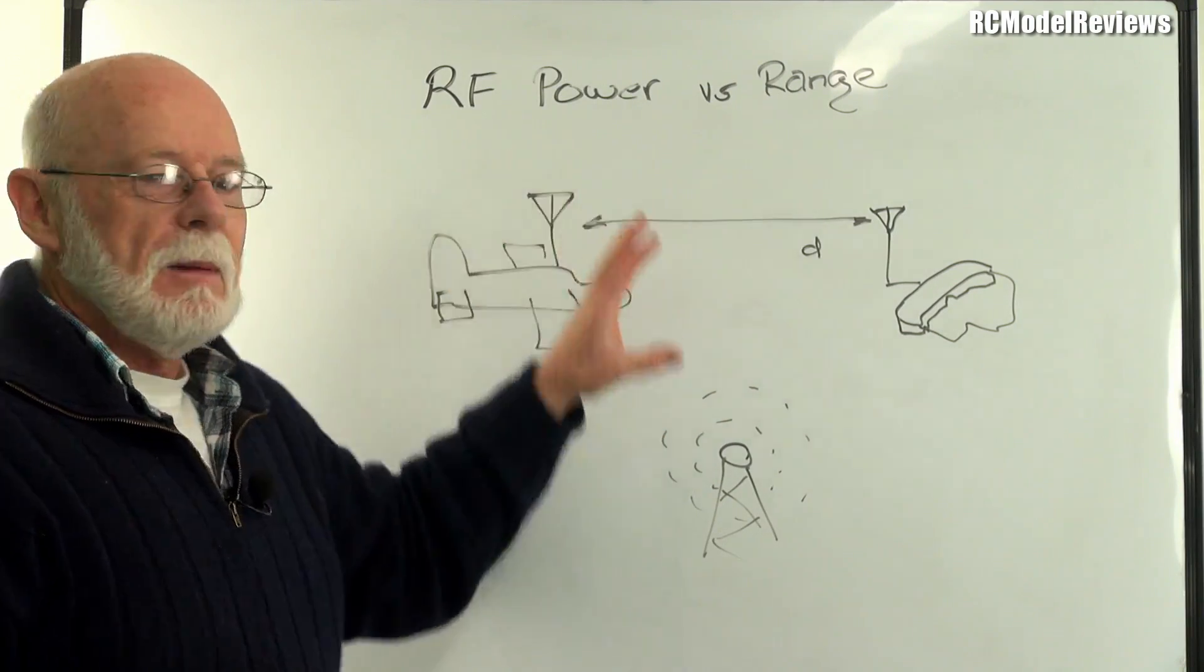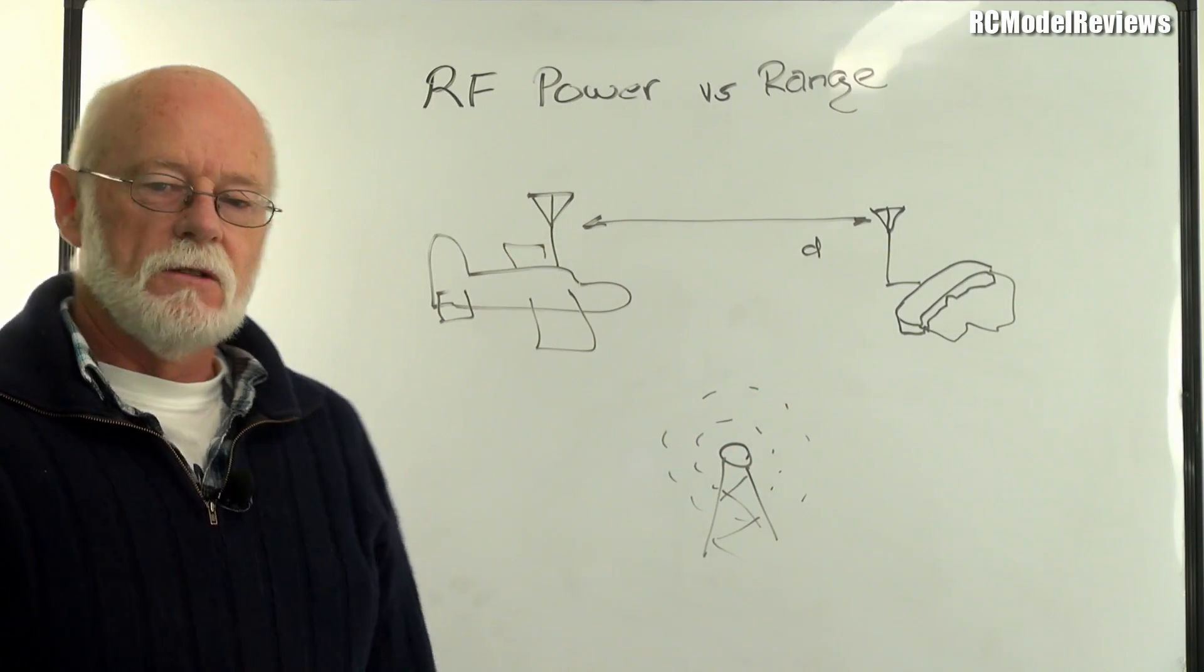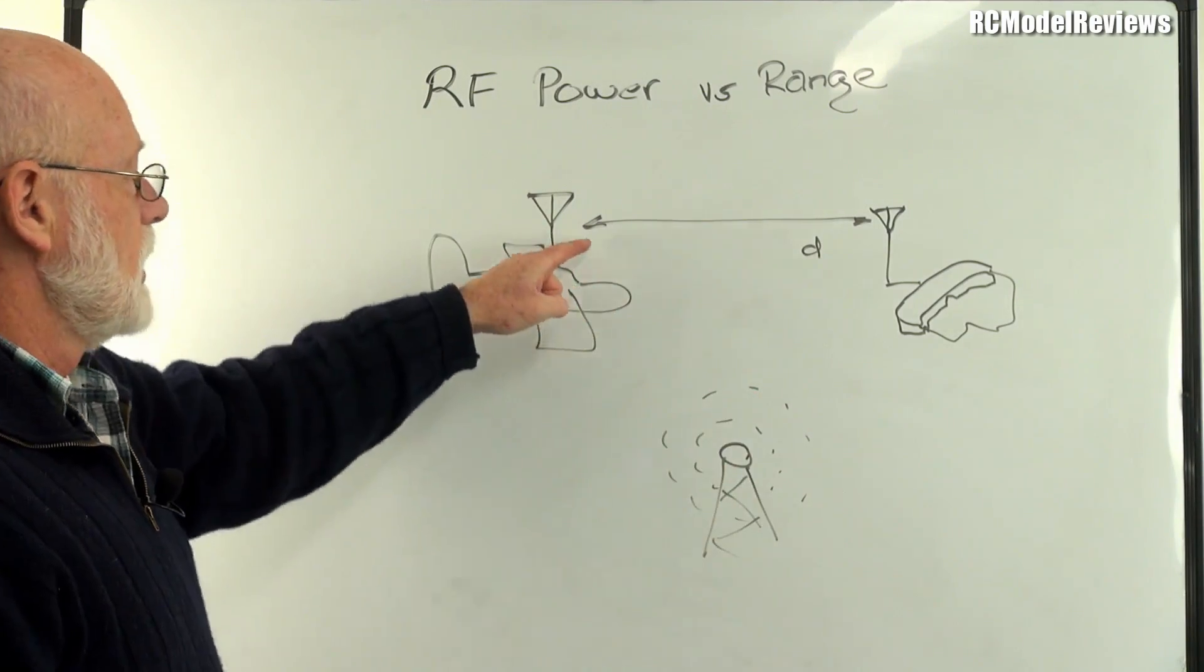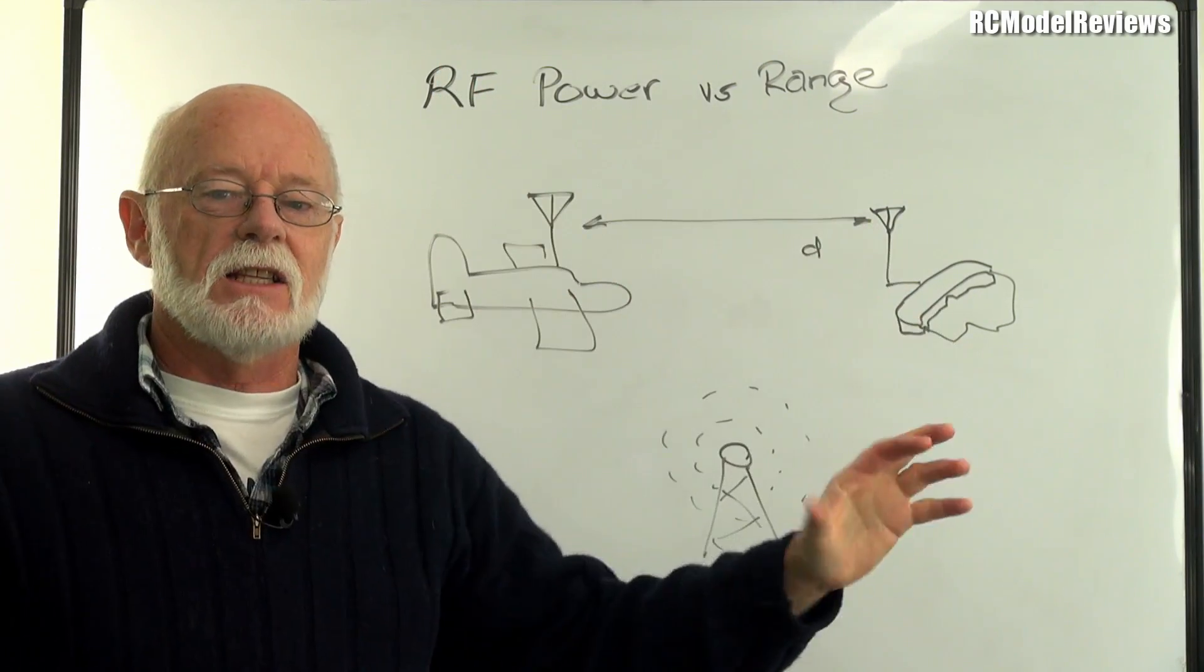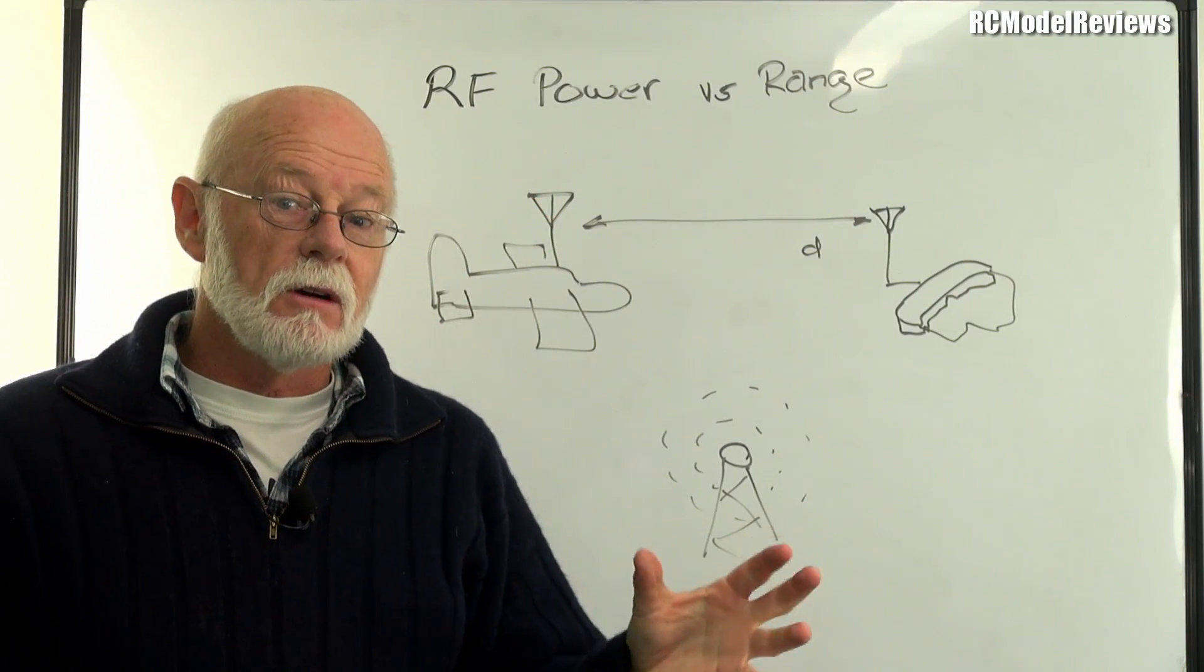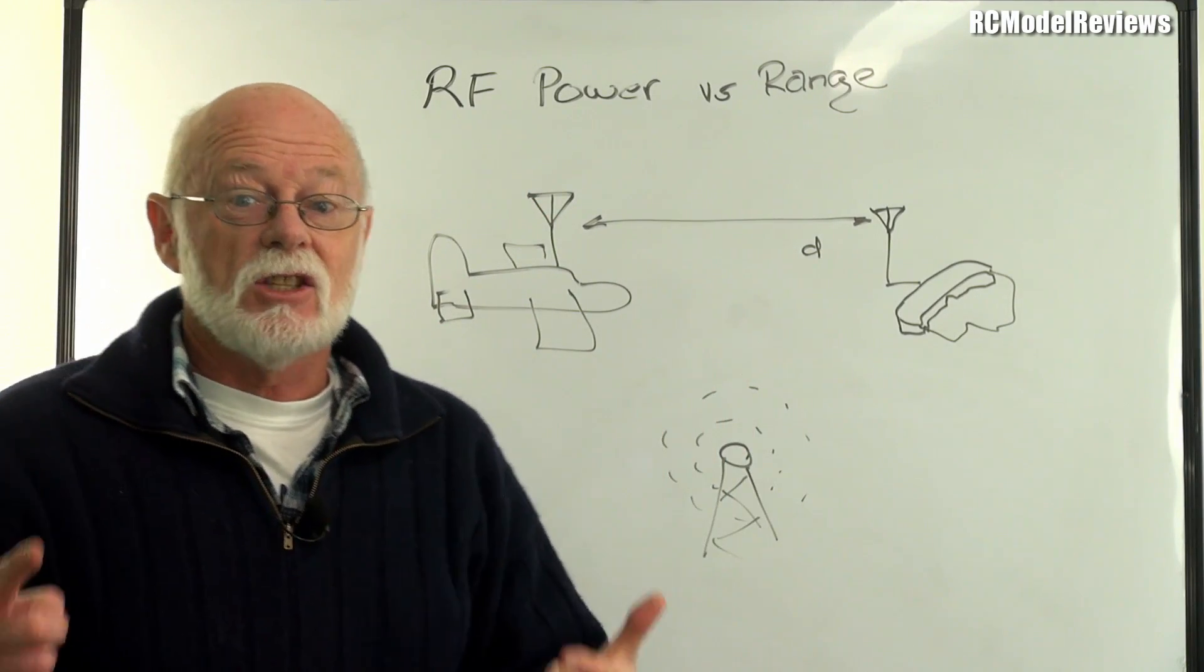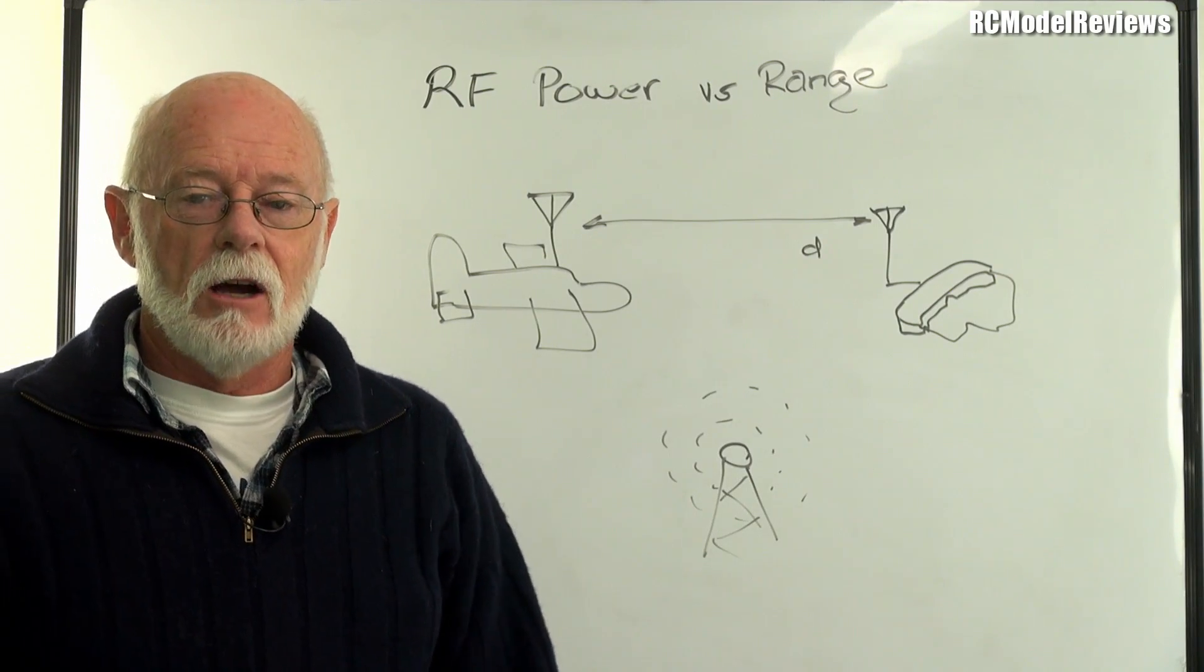So increasing your power is not necessarily the best way to get more range, because other things happen. Remember, we're not the only people using this band. We're using 5.8 GHz. There are other systems that use 5.8 GHz. Now we've got our antenna on a plane or a quad, high in the sky. The signal we broadcast can go an awfully long way. So if you start using high power levels, then you run into the problem that you start interfering with other systems, other services. That's not good, because when that happens, people complain, and we get in trouble. As a hobby, we get in trouble.